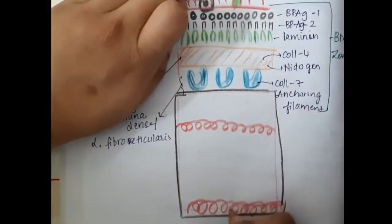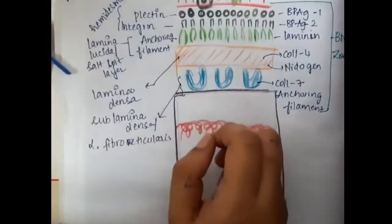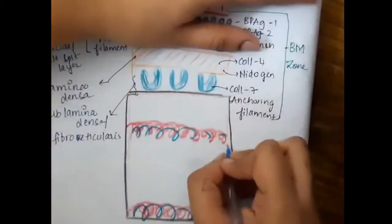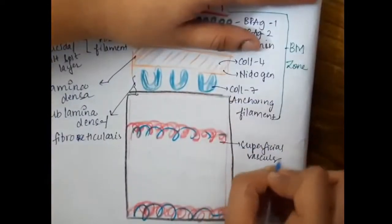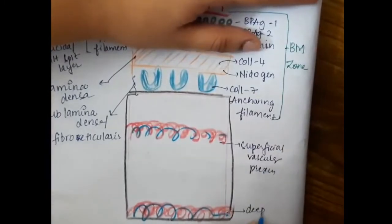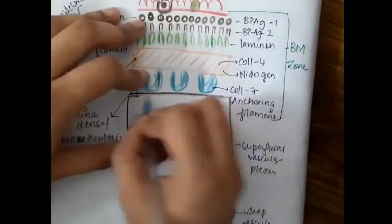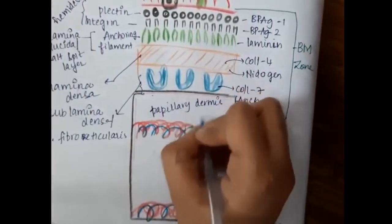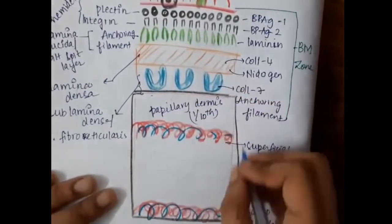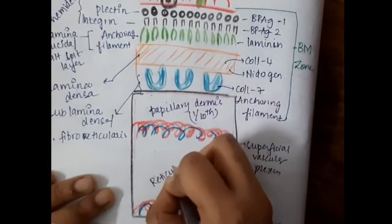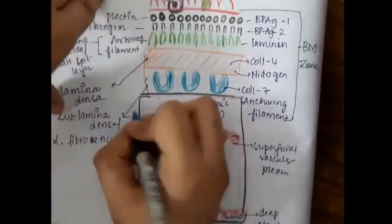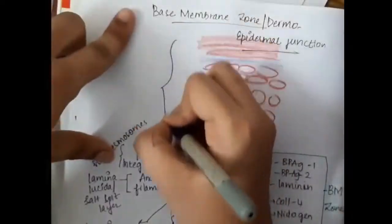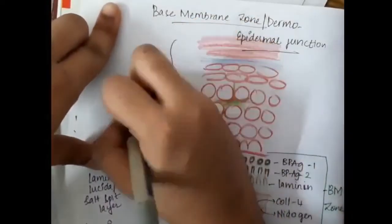In the dermis we have two types of vascular plexus: the superficial vascular plexus and the deep vascular plexus. The dermis present above the superficial vascular plexus is called the papillary dermis, which is about one-tenth of the dermis. The dermis present between the superficial and deep vascular plexus is called the reticular dermis.